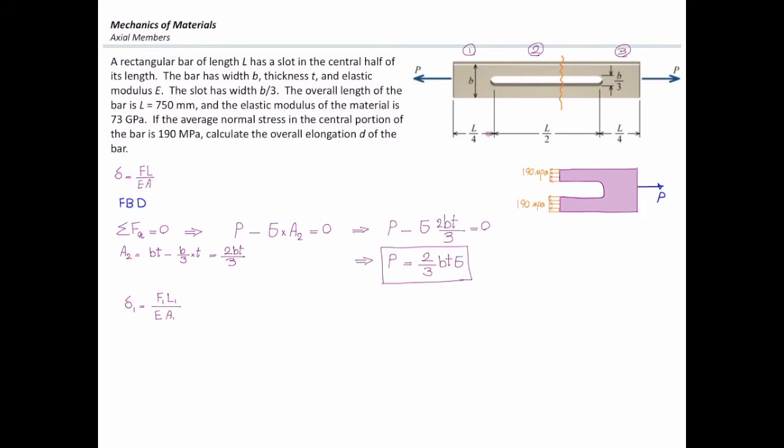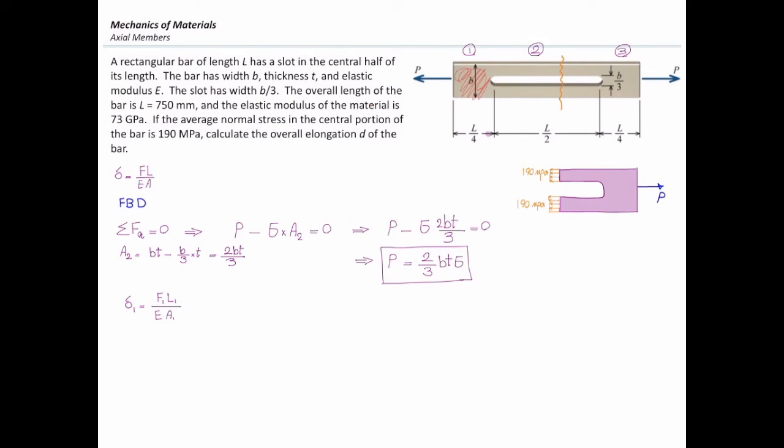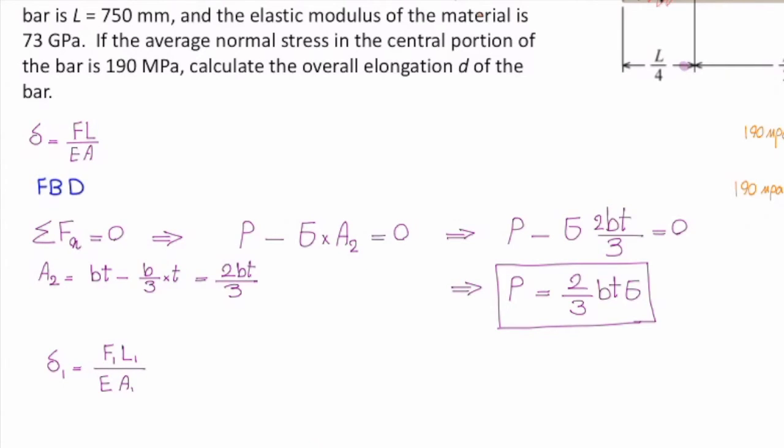Now I can determine deformations in each part of this beam. In the first part, the internal force is P, because P is constant everywhere in that rod. The length is L over 4, which is 750 over 4. Modulus of elasticity is 73 gigapascal, which equals 73,000 megapascal. The area of that part is B times T.